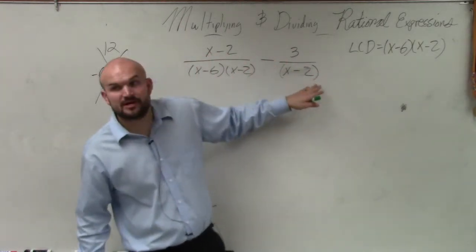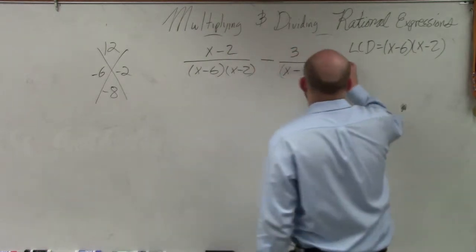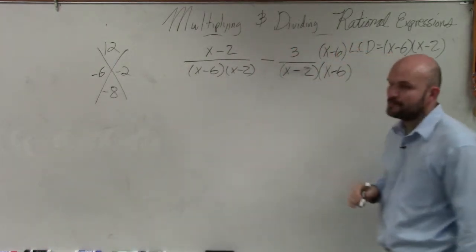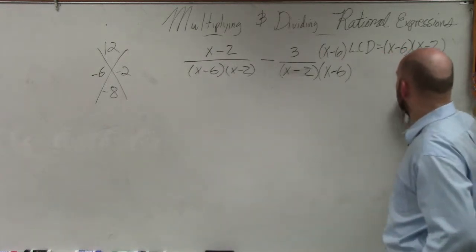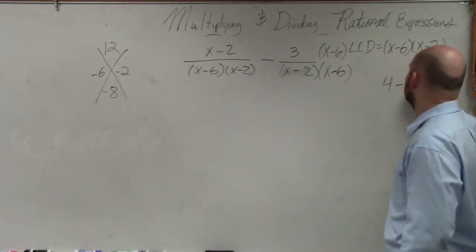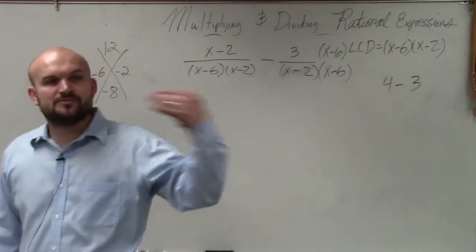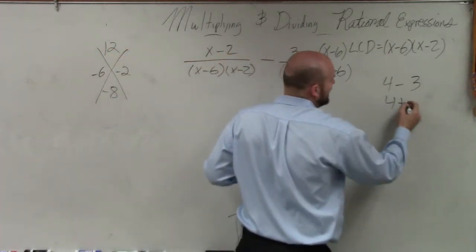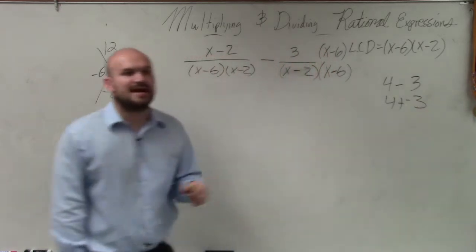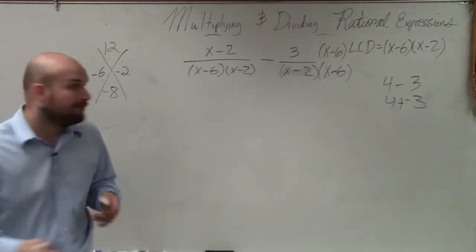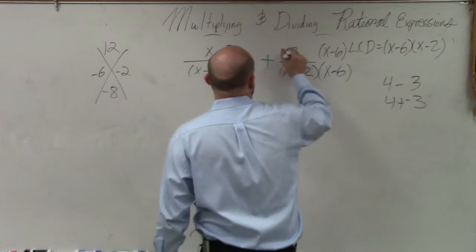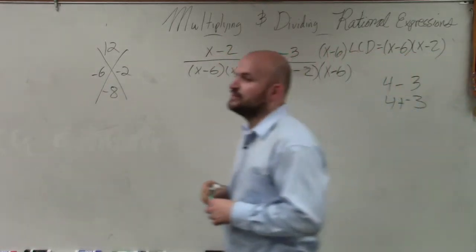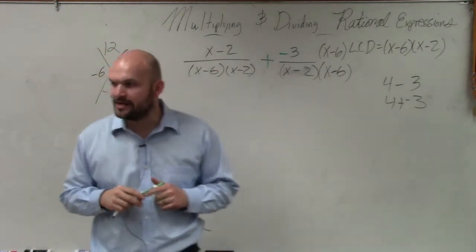All right, so now to get this to be our common denominator, I need to multiply by x minus 6 on the top and on the bottom. Now it's also important for me to note to you guys, we can always rewrite a subtraction problem as an addition problem. Here's one of the major mistakes that students will make. When they're subtracting, I recommend rewriting the subtraction problem as an addition problem. This is helpful when you guys are doing your work, especially when you have to distribute that. So the next thing that I do is rewrite my subtraction problem as an addition problem.